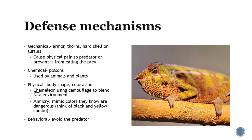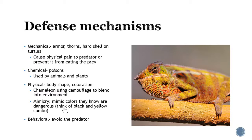Some organisms use their body shape or coloration to help avoid predators. Chameleons are a great example — they love to camouflage and blend into their environment. There's also warning coloration: if certain colors are known to indicate danger, a species will use those colors to their advantage. When you see black and yellow, you think of wasps and bees, and you know those are painful, so other insects use that same coloring. Anything that sees that color combination knows to stay away. Behavioral defenses also help — if you stay away from the predator, you won't get eaten.